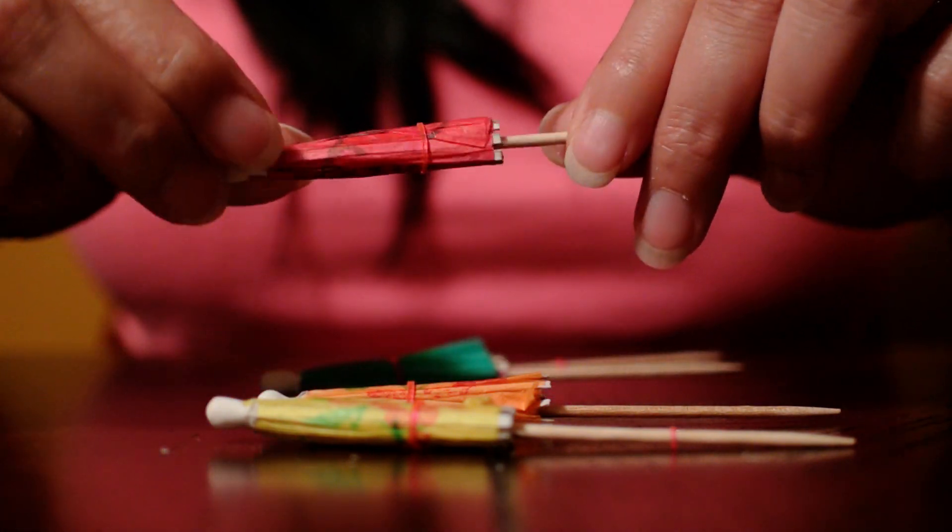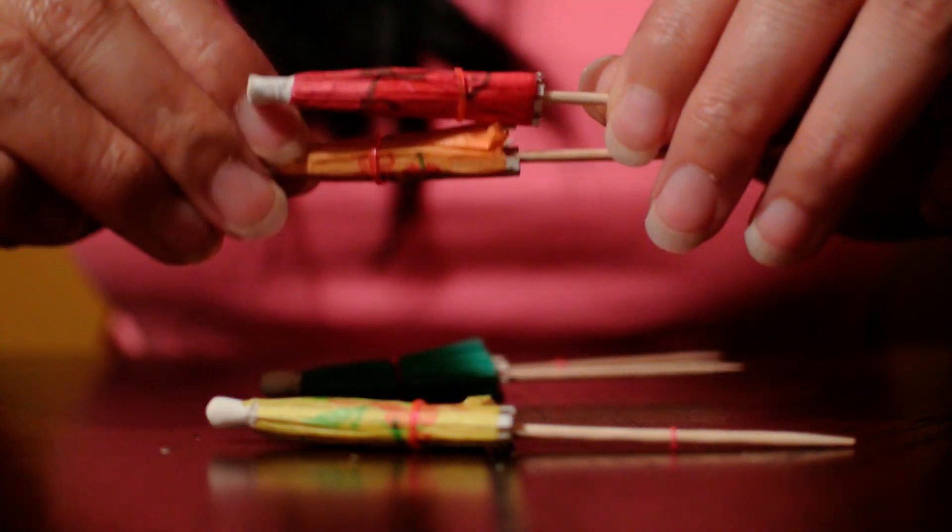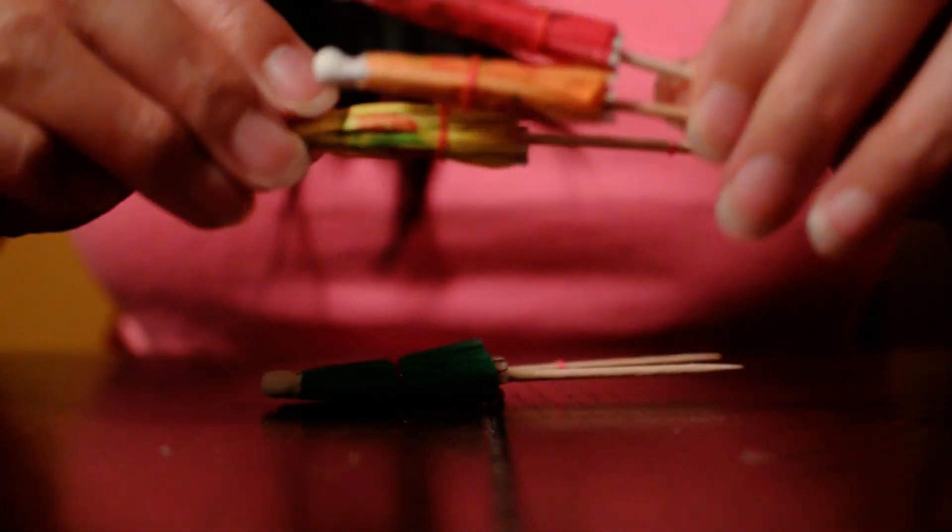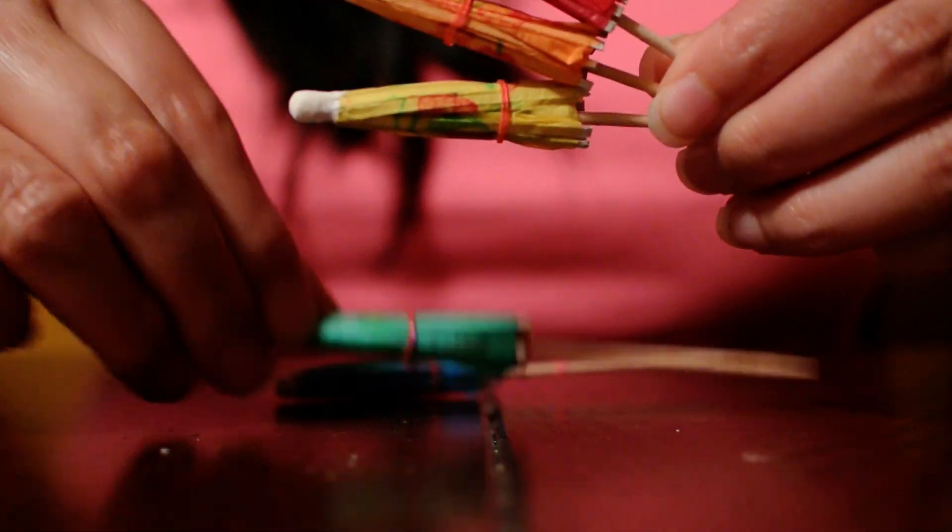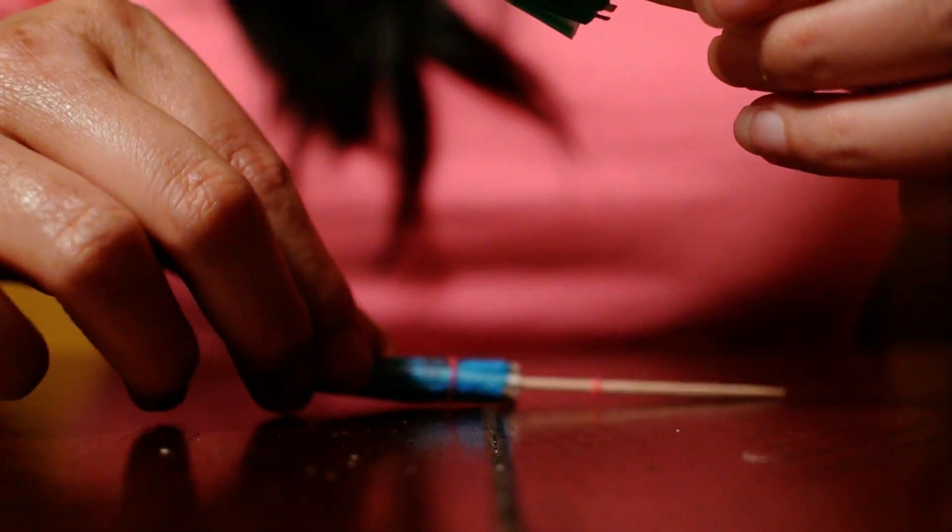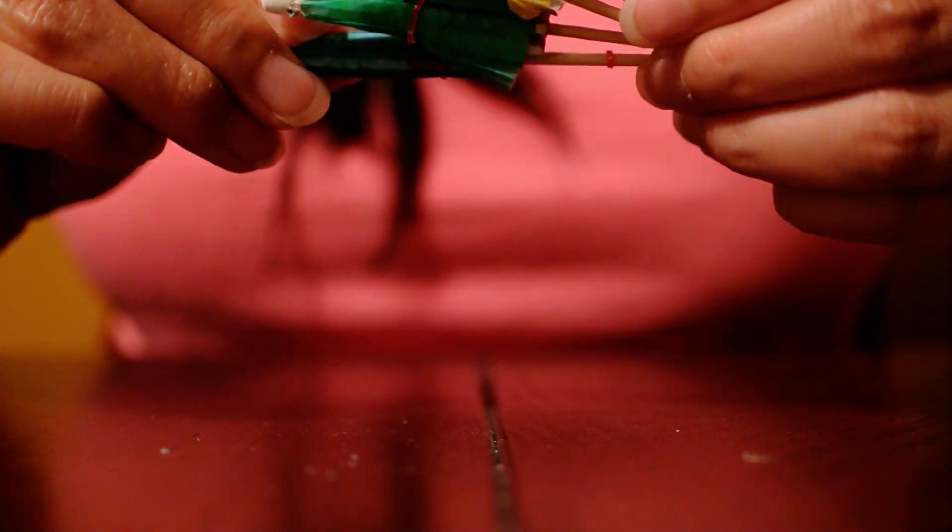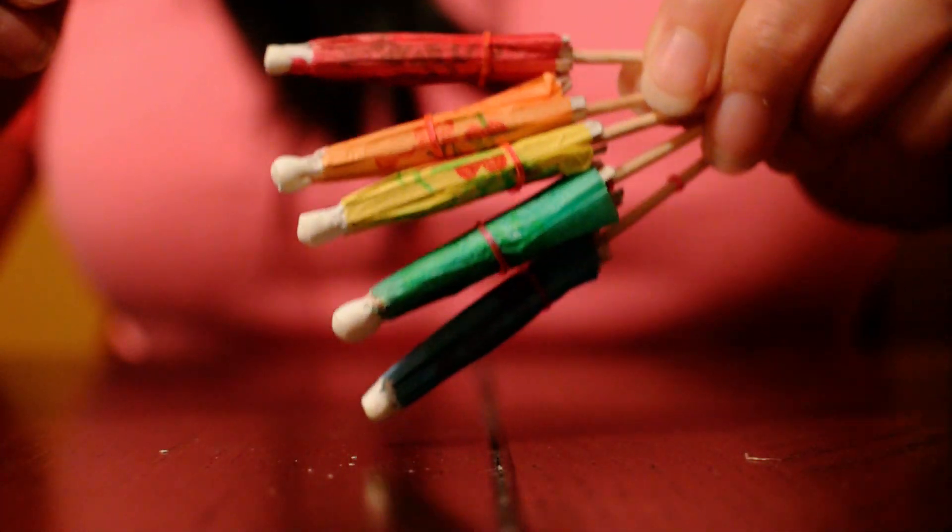So I put them kind of in order I guess. Let's start with red. Orange. Yellow. Green. And blue. Like a rainbow.